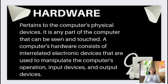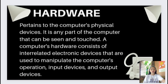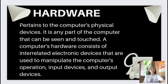Hardware pertains to the computer's physical devices. It is any part of the computer that can be seen and touched. A computer's hardware consists of interrelated electronic devices used to manipulate the computer's operation, input devices, and output devices. Hardware encompasses all the physical parts of a computer, ranging from the essential processing unit and memory to storage devices, input and output devices, and various other components required for the device to operate effectively.